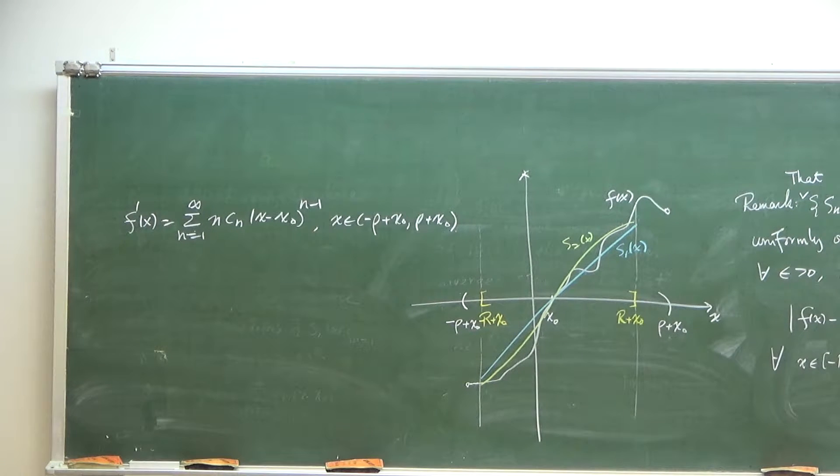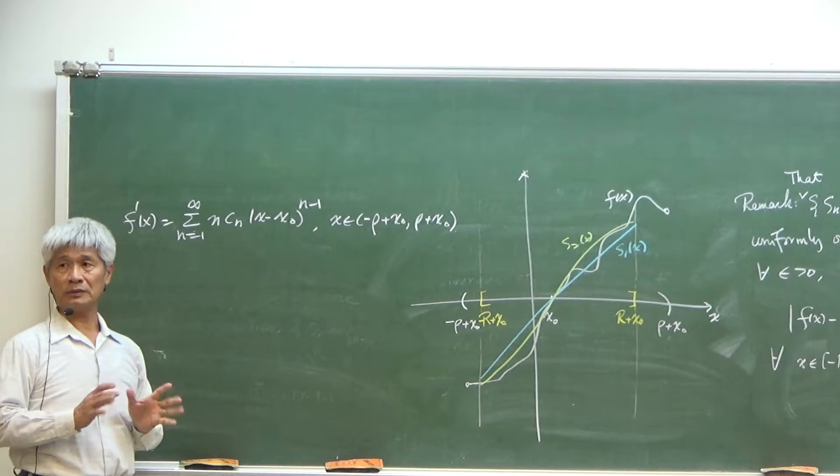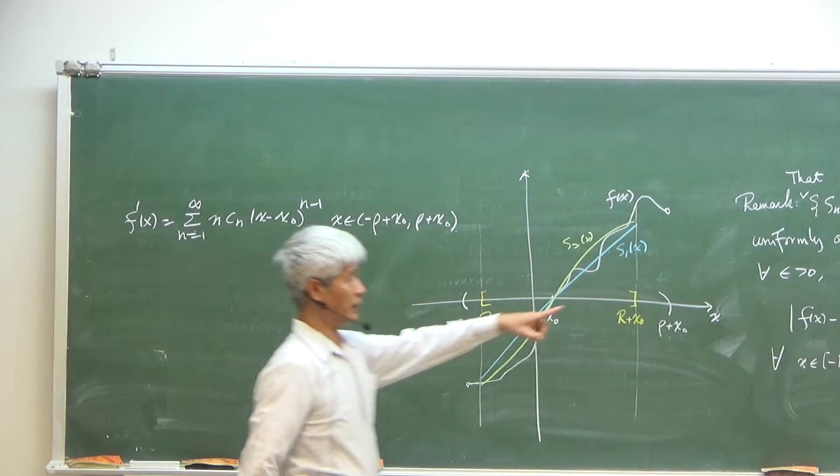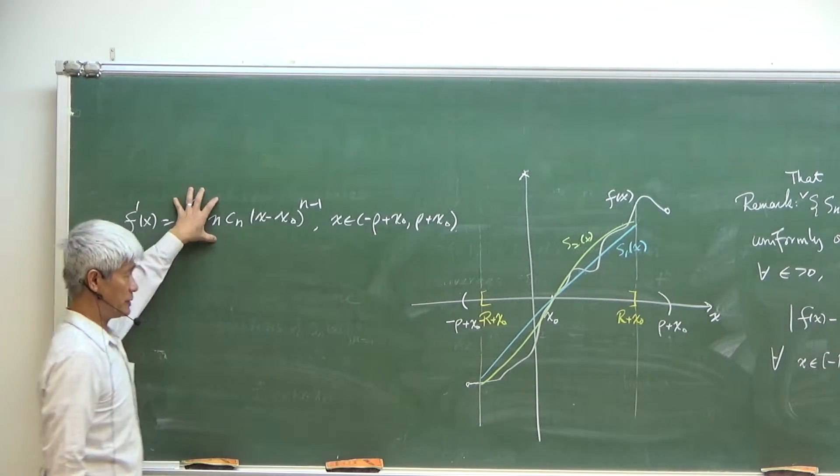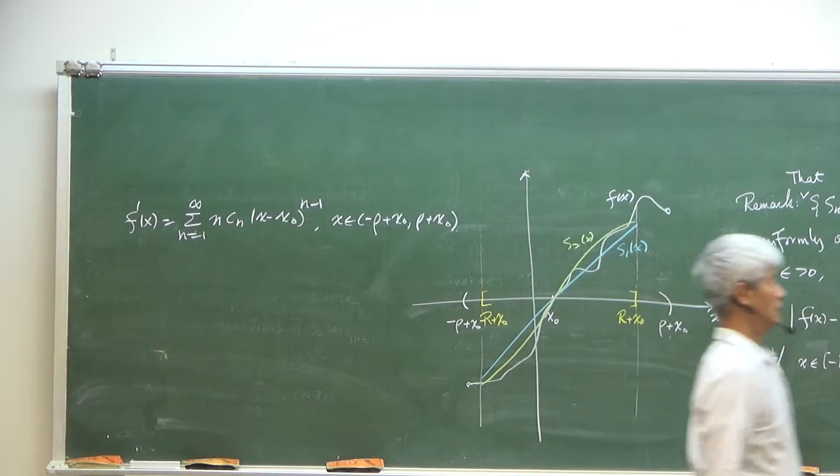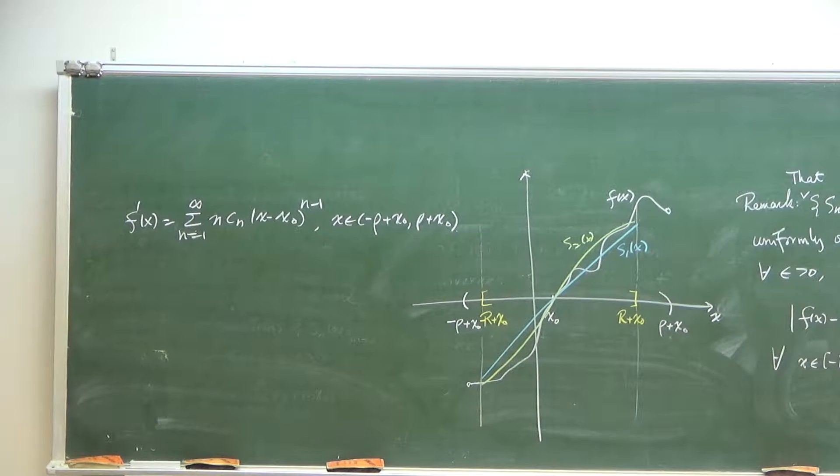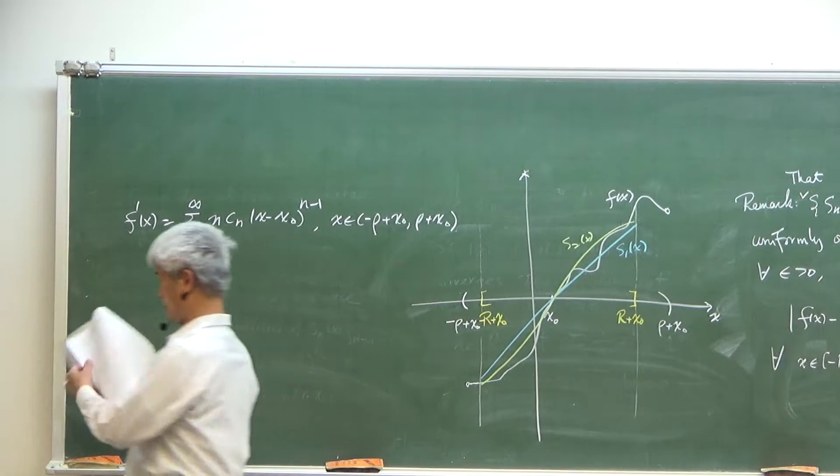So the proof is non-trivial. We have to prove that this power series has the same radius of convergence as the original one, and prove that this power series is equal to the derivative. So once you have a power series extension it will be differentiable.